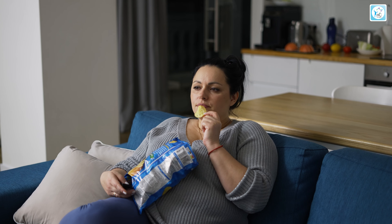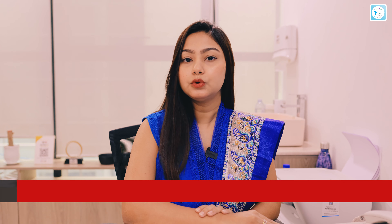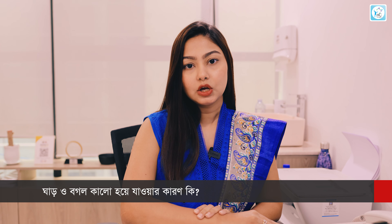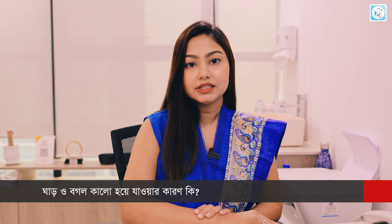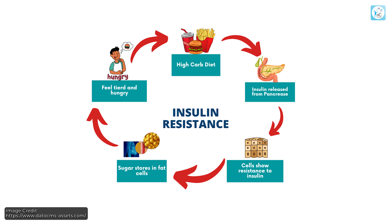Why does Acanthosis Nigricans occur? Insulin resistance. Our body's insulin production is unable to manage blood glucose levels properly, leading to these adverse effects.